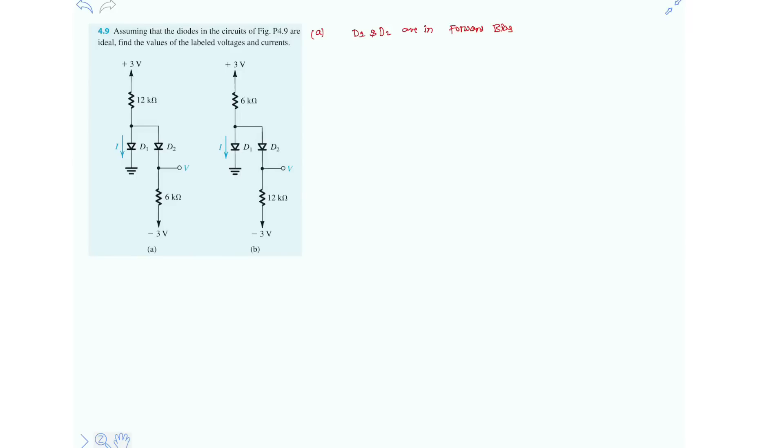Now one thing you should remember: these diodes D1 and D2 are ideal. So ideal diodes in forward bias is a short circuit, in reverse bias it's an open circuit.